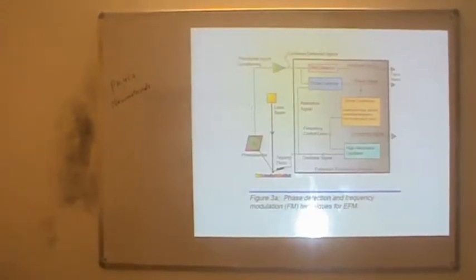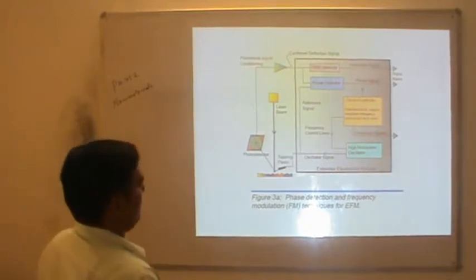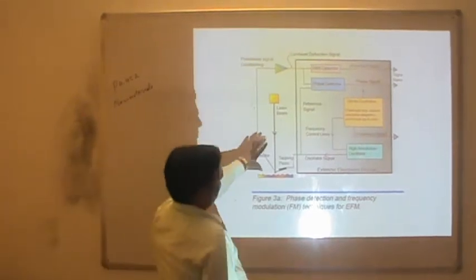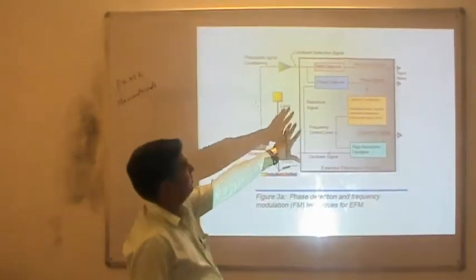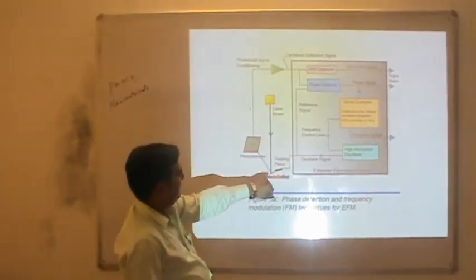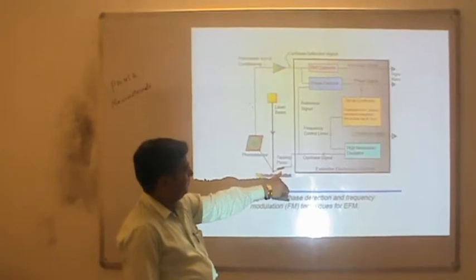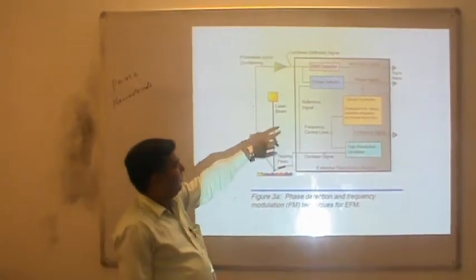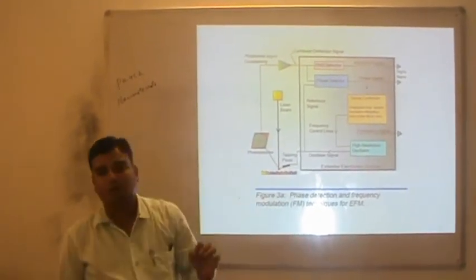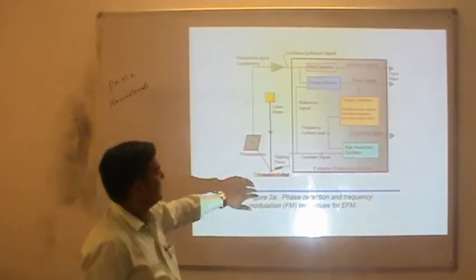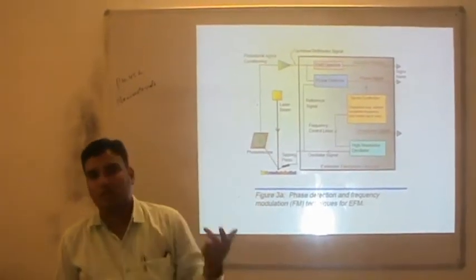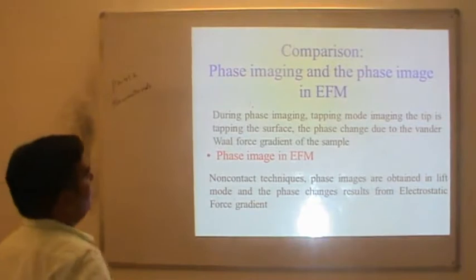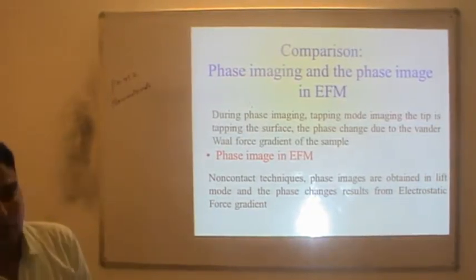This diagram illustrates the electric force microscopy setup. There is the sample, the piezo material which has tapping properties and can move up and down, and the laser beam. In the absence of any electrostatic force, the laser has a particular position, which is deviated or changed whenever an electrostatic force is exerted — the cantilever deflects accordingly.